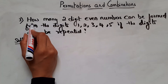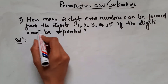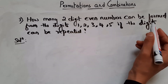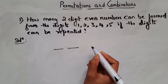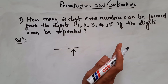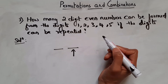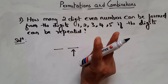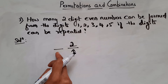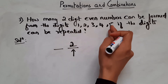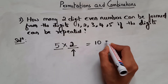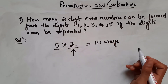Now let's see the third problem. How many two-digit even numbers can be formed from the digits 1, 2, 3, 4, and 5 if the digits can be repeated? To be an even number, the unit place digit must be a multiple of 2, so 2 or 4 — that gives 2 ways. The tens place can be 1, 2, 3, 4, or 5 — so 5 ways. Therefore the total is 5 cross 2, which is 10. So 10 two-digit even numbers can be formed.